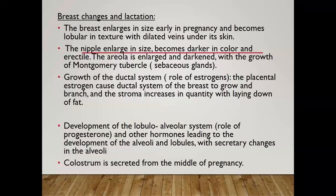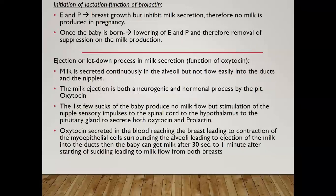Colostrum is secreted from the middle of pregnancy. Regarding the initiation of lactation, estrogen and progesterone cause breast growth but inhibit milk secretion, so very little milk is produced during the whole pregnancy. Once the baby is born, estrogen and progesterone decrease in the mother's body, removing the inhibitory effect on milk production, so milk is secreted.